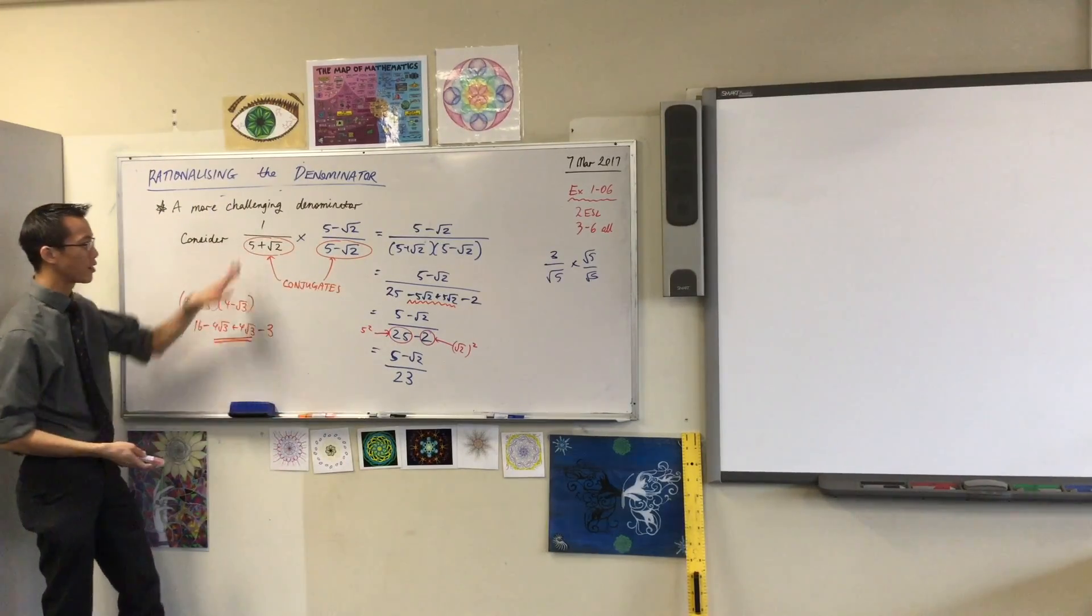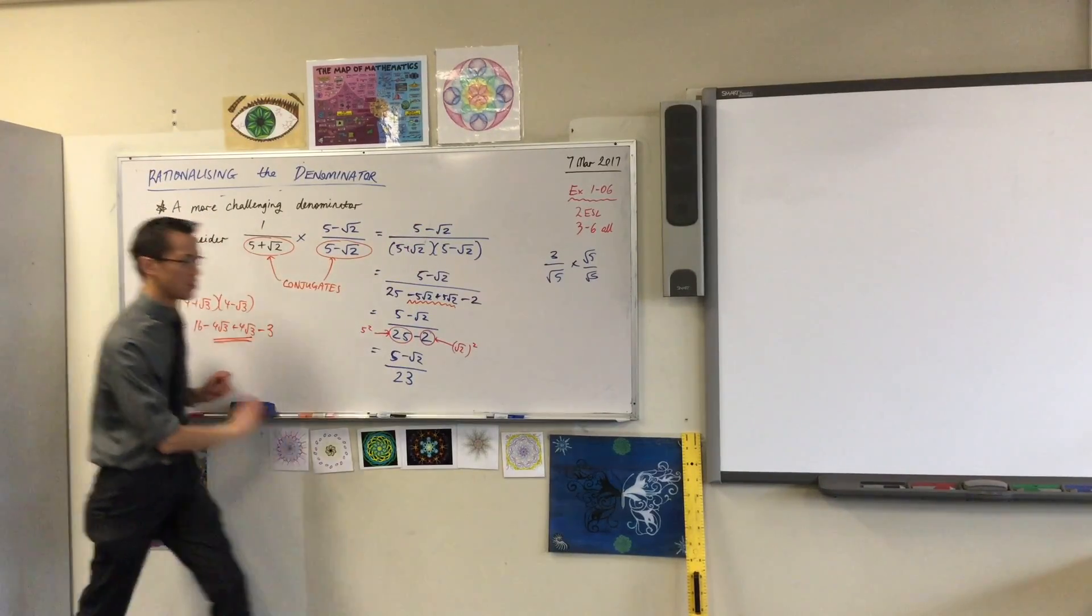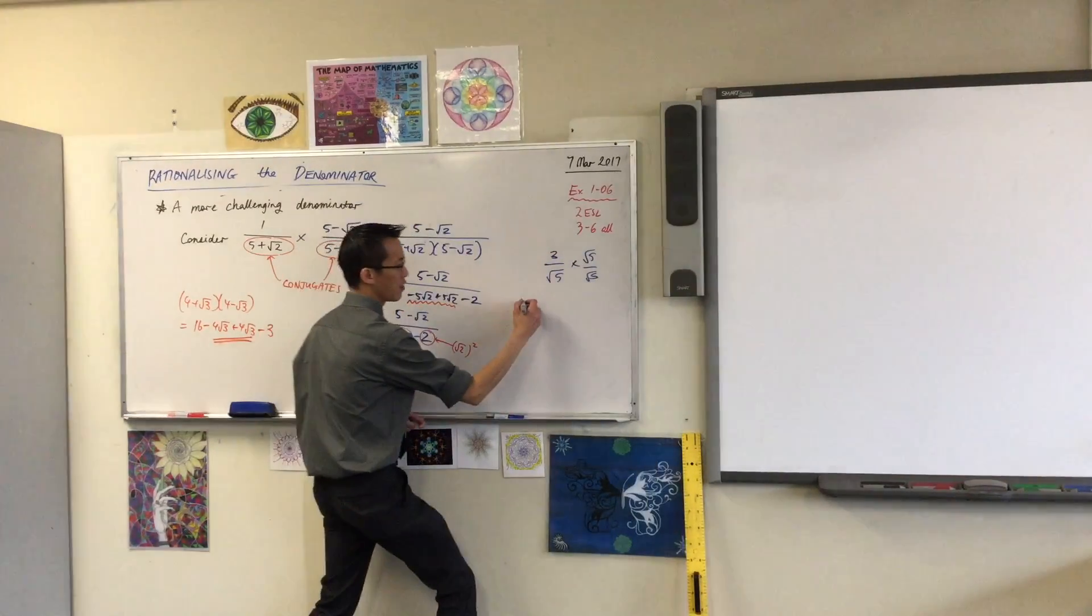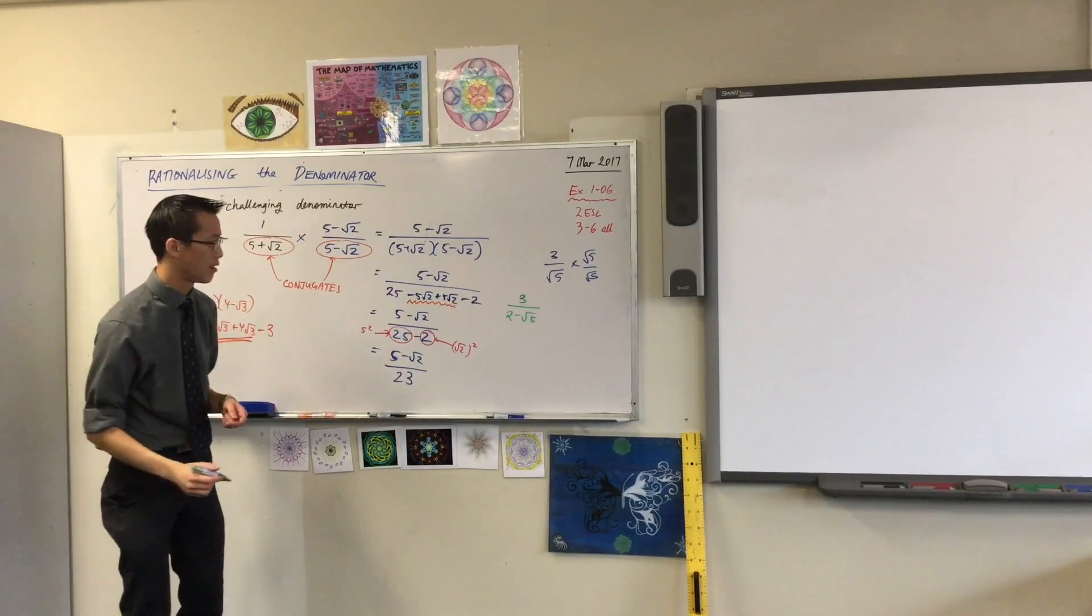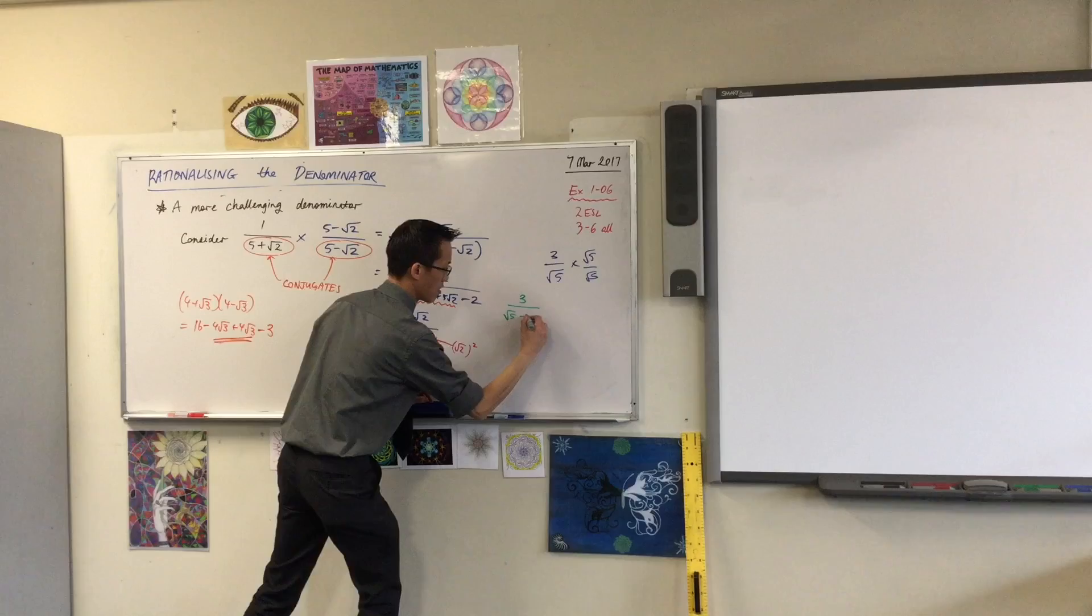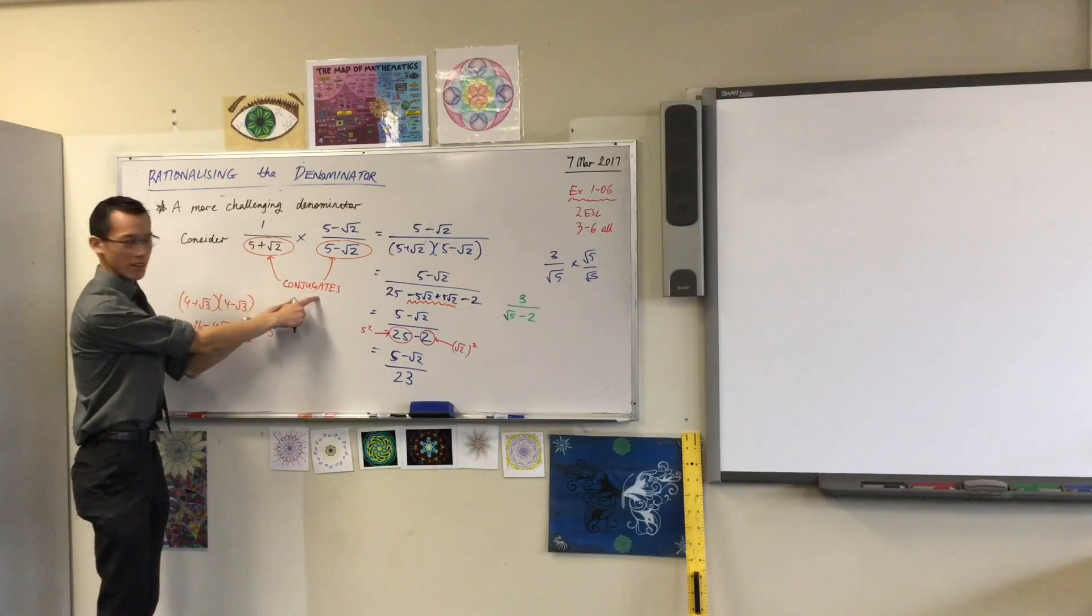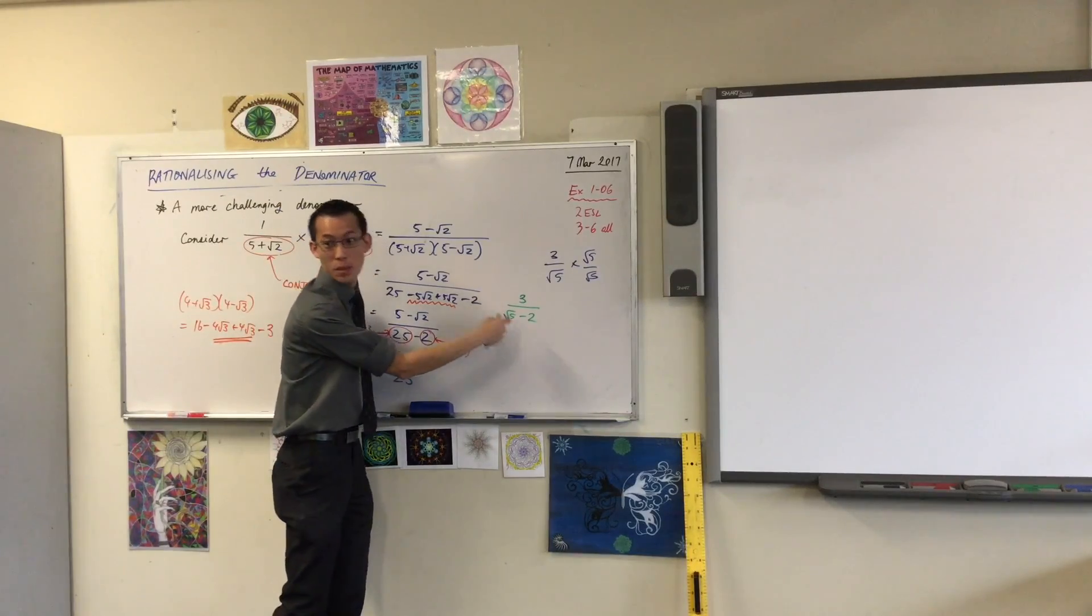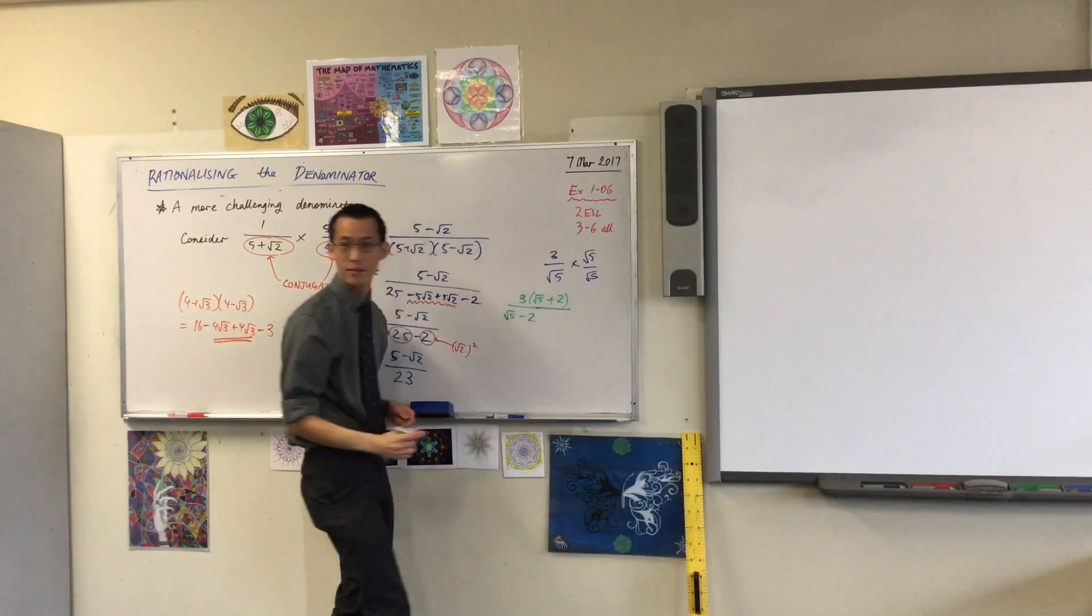So in fact, if I saw something with something like this, I don't even need to do all of this expansion. I know it's going to do the same thing every single time. So let me show you what it would look like if I just skipped all of that unnecessary working. If I said to you, hey, can you rationalize that? What is the conjugate of that guy over there? All I do is write the same numbers with a plus sign. The same numbers with a plus sign. Is that okay?